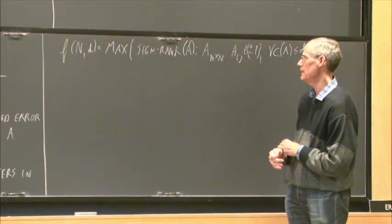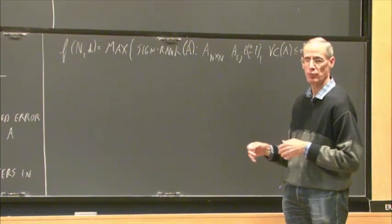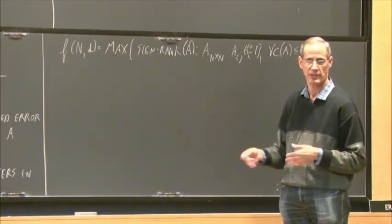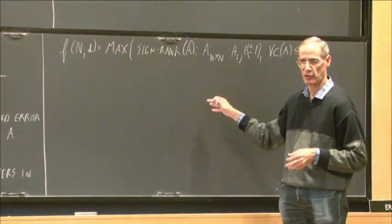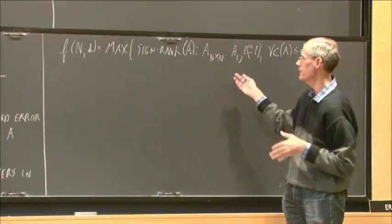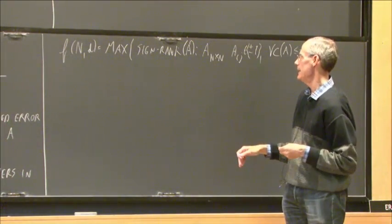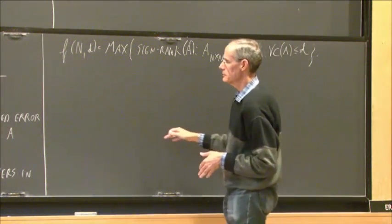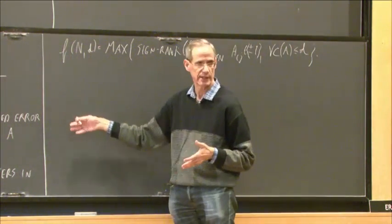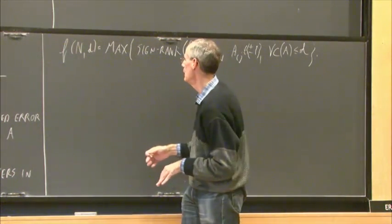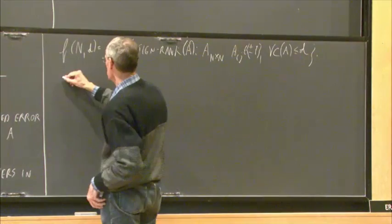One thing we want to understand is what the maximum possible sign rank of a matrix with VC dimension d could be. I am really thinking about constant d. This will have applications to learning and communication complexity, but let's think about it combinatorially. Let's also denote f(n) as the maximum over d of f(n, d) — the maximum possible sign rank of an n by n sign matrix.